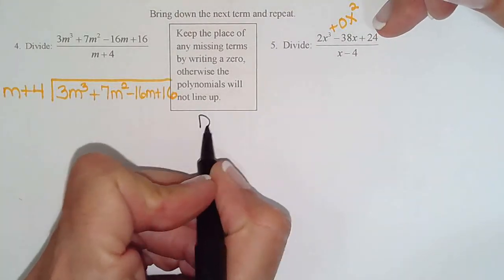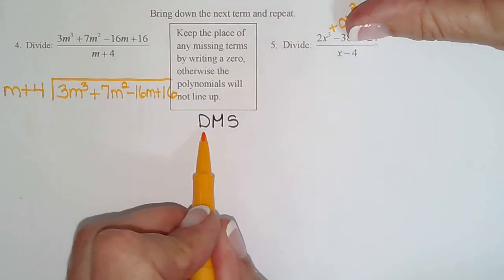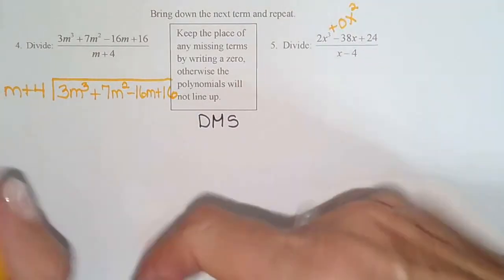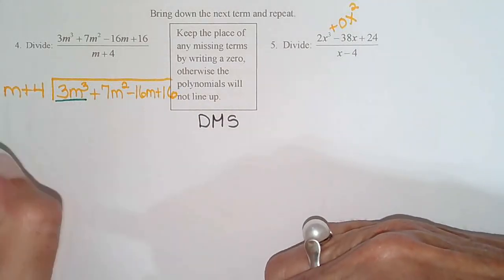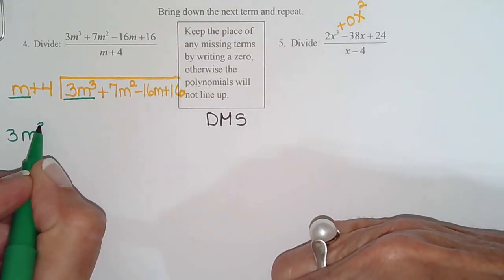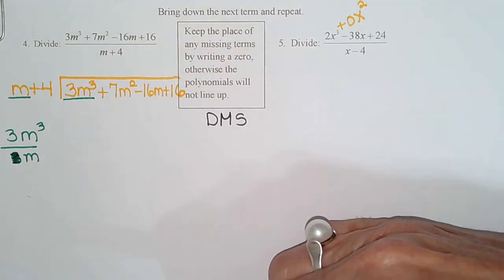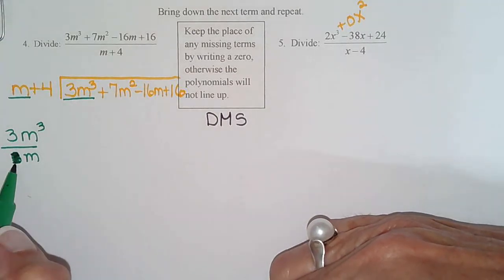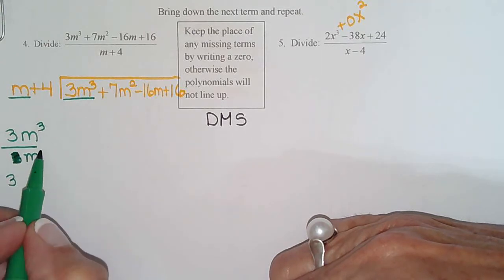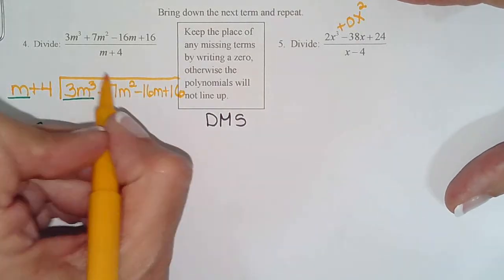So let's start our problem. So let's put our DMS here so that we can track our progress through the problem. So divide. We always divide the front terms. So we divide this term by this term. So let's go over here in the front. So when I divide those I get 3 divided by 1, which is 3, 3 minus 1 m squared. So that's going to be my first quotient. So I go up above this squared term and write 3m squared.